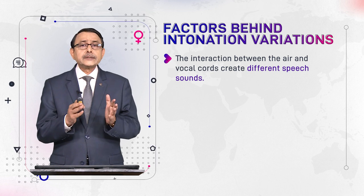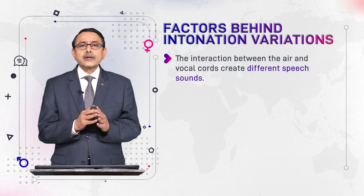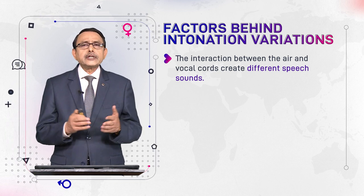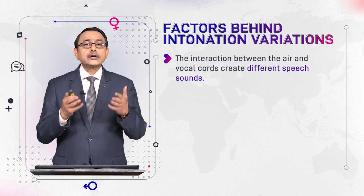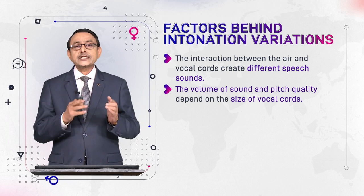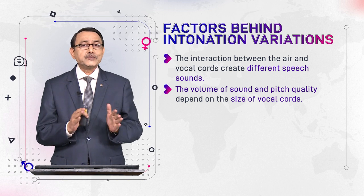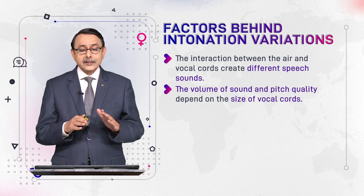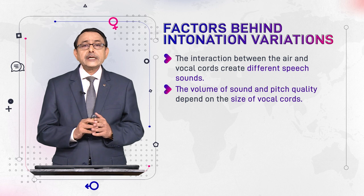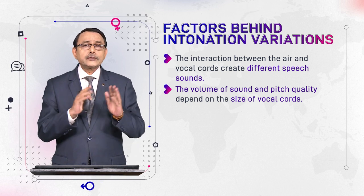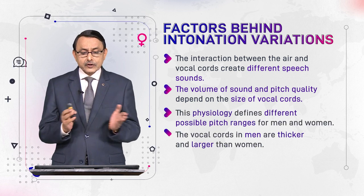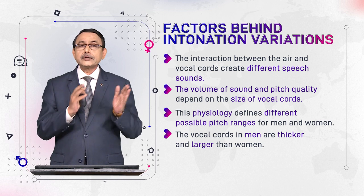The way vocal cords interact with passing air results in the production of different speech sounds — in English, for example, different types of consonants and vowels. The volume of sound and pitch quality depend on the size of the vocal cords, and the size differs between men and women. This physiology defines different possible pitch ranges for men and women.